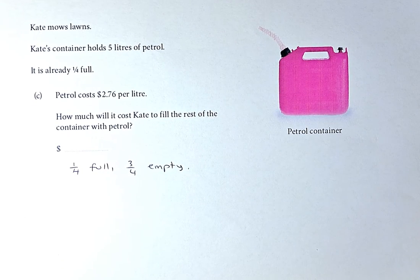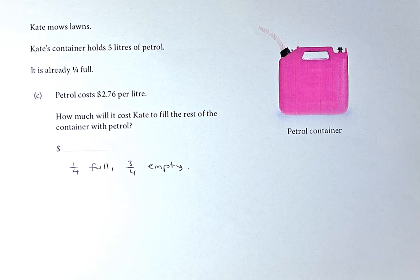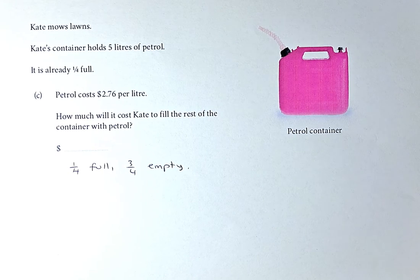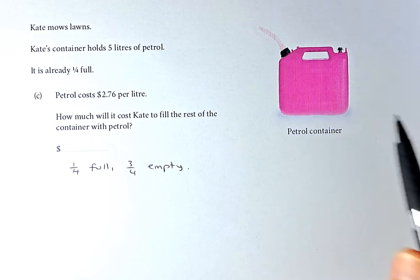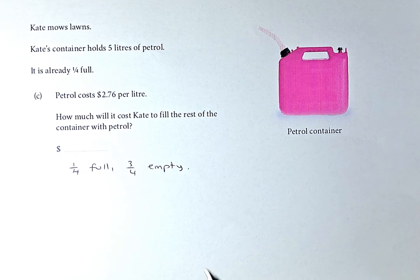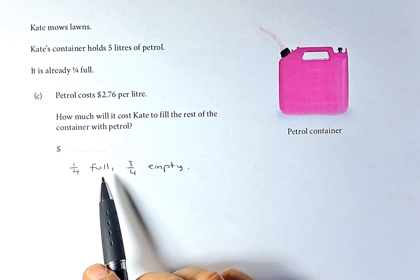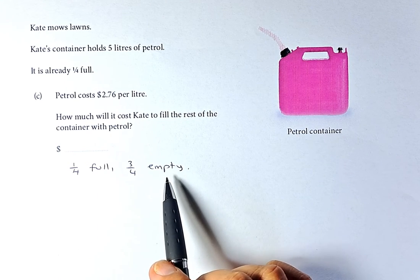Kate mows lawns. Kate's container can hold 5 litres of petrol. It is already one quarter full. Petrol costs $2.76 per litre. How much will it cost Kate to fill the rest of the container with petrol? We know it is one quarter full, so three quarters empty.